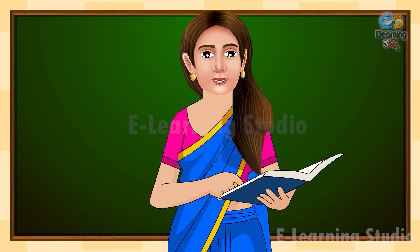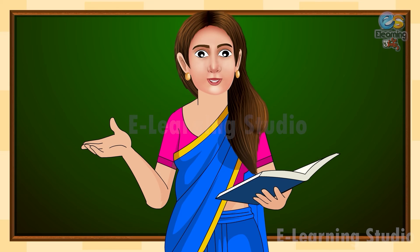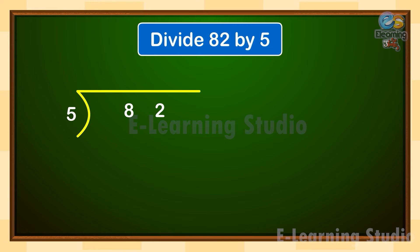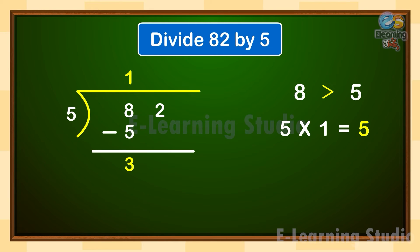Dividing two-digit numbers. Hello children, welcome back. In today's video, we will learn a new concept which is dividing two-digit numbers. Let us divide 82 by 5. Here, 8 is greater than 5, so 5 goes into 8 one time. On dividing 8 by 5, we get 1 as the quotient. Write 1 as the first digit of the quotient on the top. Write the product — 5 ones are 5 — below 8 and subtract to get 3. Bring down the next digit of the dividend, so we have 32 as the new dividend.